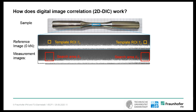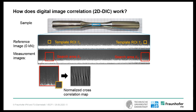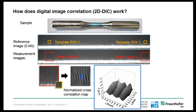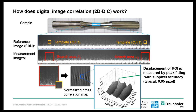Now let's turn to the measurement principle. For fatigue measurements, you need a 2D DIC system. This takes at least two images from the sample surface: one reference image at zero load and one or more measurement images. Within the reference image, you define at least two regions of interest. Within the measurement images, you look for the position of these templates by correlation. The result is a normalized cross-correlation map with a peak, and the position of this peak gives you the displacement of an ROI. By peak fitting, you obtain sub-pixel accuracy in the range of 1/20th of a pixel.